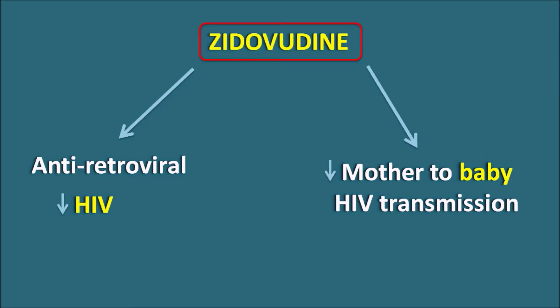Zidovudine has structural similarity with the nucleosides and it inhibits the reverse transcriptase enzyme. That's why this drug belongs to the category of NRTI — Nucleoside Reverse Transcriptase Inhibitors. Among the NRTIs, Zidovudine is used to prevent mother-to-baby HIV transmission as well as for the treatment of HIV infection along with other drugs.